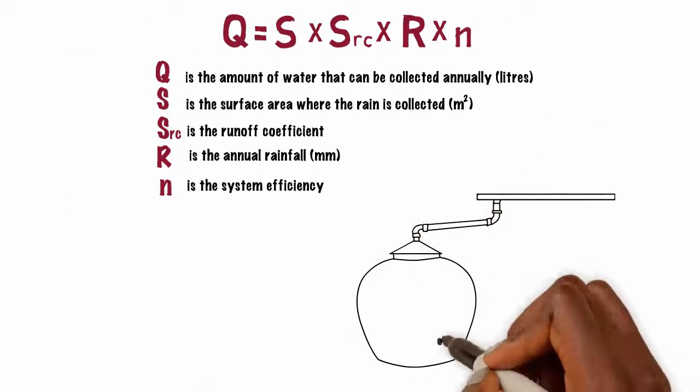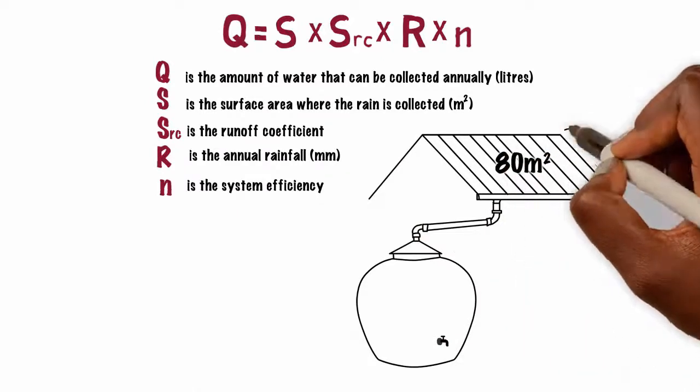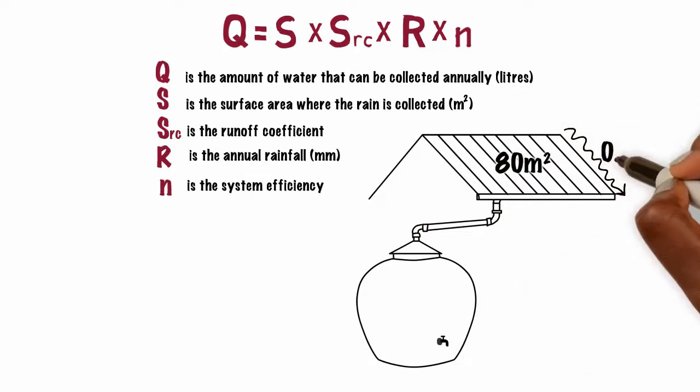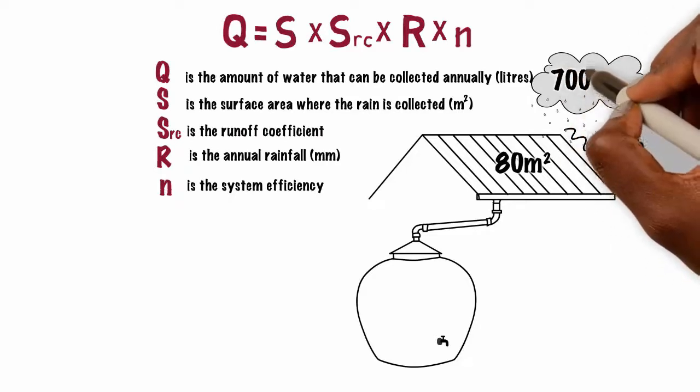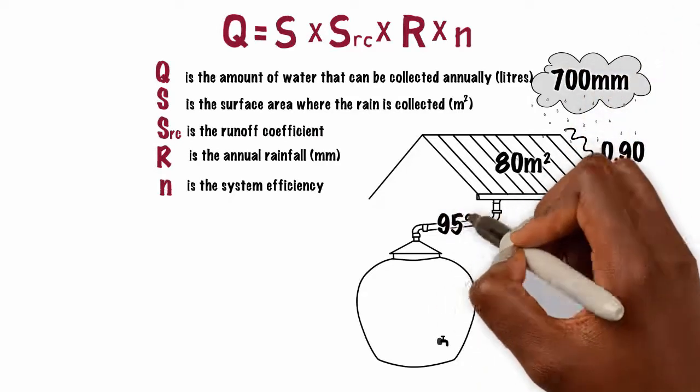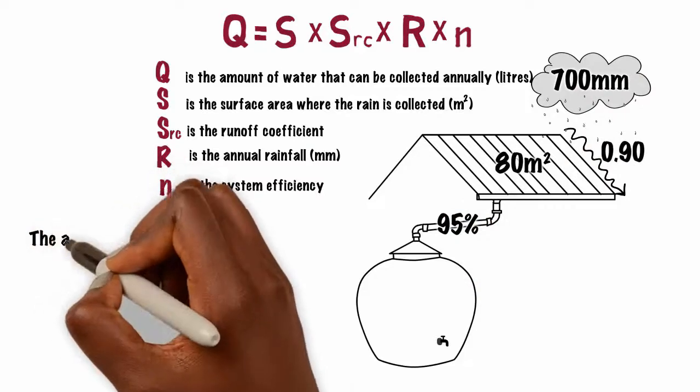if the surface area of a roof is 80 meters squared with a runoff coefficient of 0.9, the annual rainfall of 700 millimeter and a rainwater harvesting system with efficiency of 95 percent,